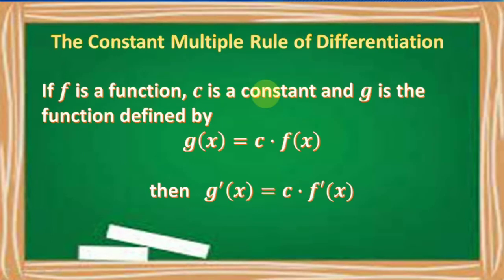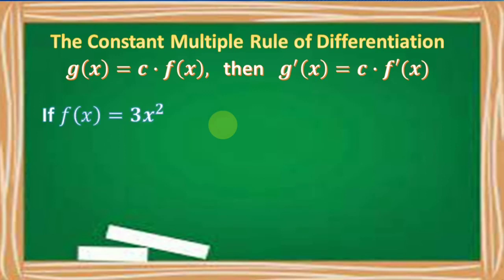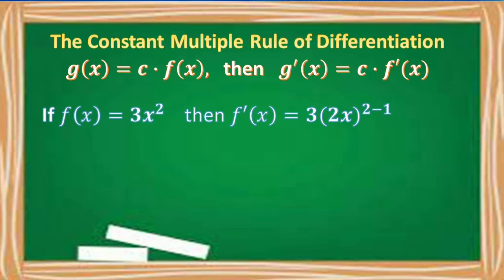With the constant multiple rule of differentiation, if f is a function, c is a constant, and g is the function defined by g of x is equal to c times f of x, then g prime of x or its derivative is equal to c times f prime of x. For example, if f of x is equal to 3x squared, then f prime of x is equal to 3 times the derivative of x squared, which is 2x raised to 2 minus 1, giving us 6x raised to 1, or simply 6x.